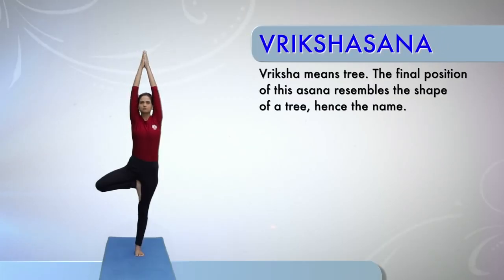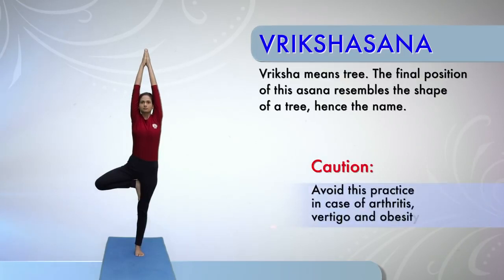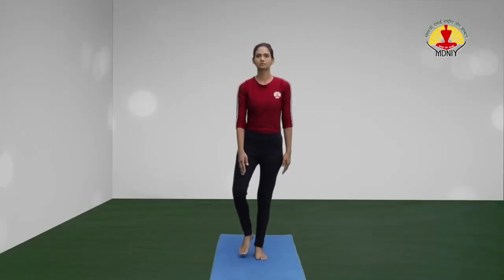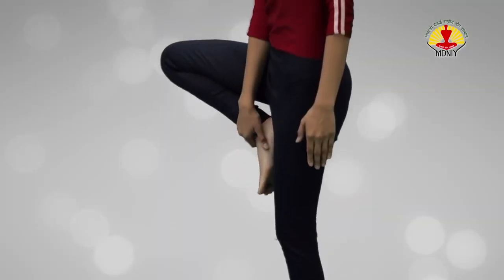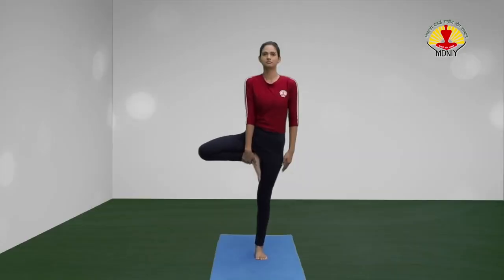Vrikshasana or the tree posture. Caution! Avoid this practice in case of arthritis, vertigo and obesity. Starting from alert posture, focus on a point in front. Exhale and move the right leg up and place the foot on the inner side of the left thigh.